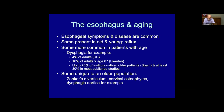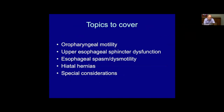Some conditions seem unique to the older population. Zenker's diverticulum, for instance, is something you won't really see in anyone below approximately mid-40s. Over the next 45 minutes, I'll go through five topics covering oropharyngeal motility, upper esophageal sphincter dysfunction, esophageal spasm and dysmotility, hernias, and special considerations.